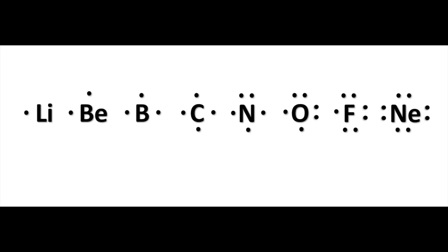Now we can go ahead and do this for any of the main group elements. Here are the Lewis dot symbols for the entire second period, starting with lithium. You can see the progression of the Lewis dot symbols as you increase the number of valence electrons.